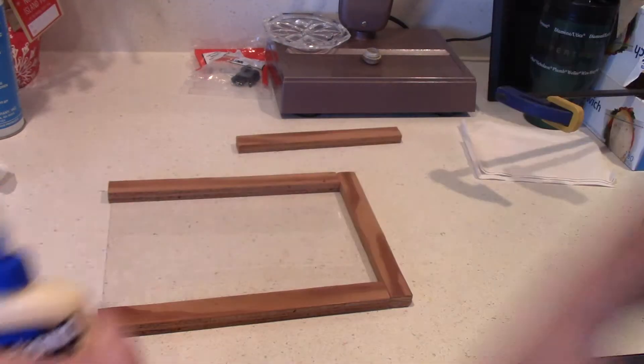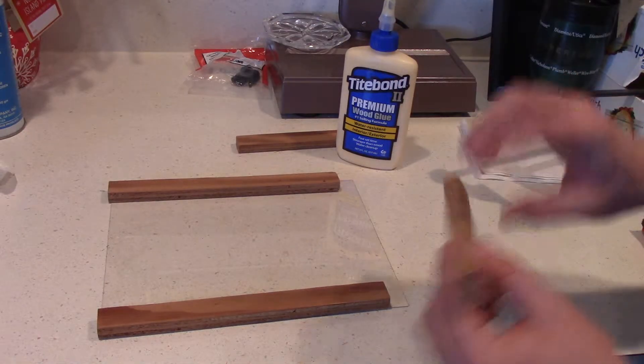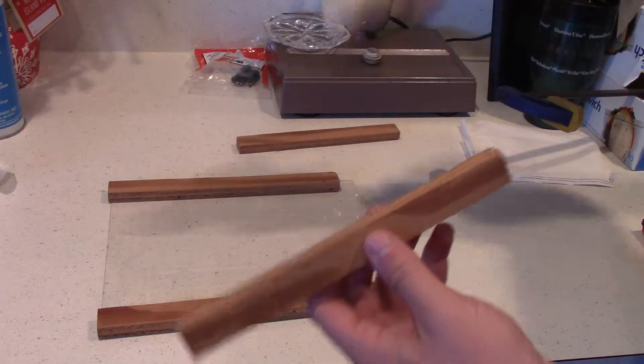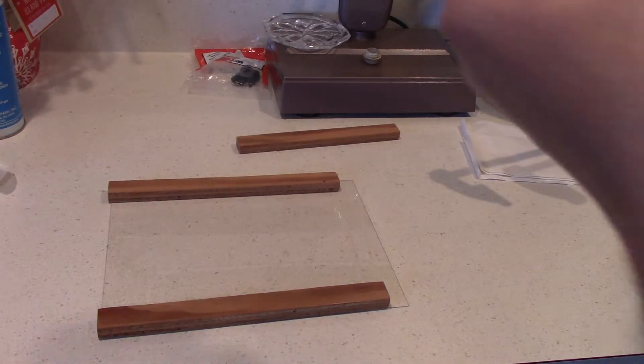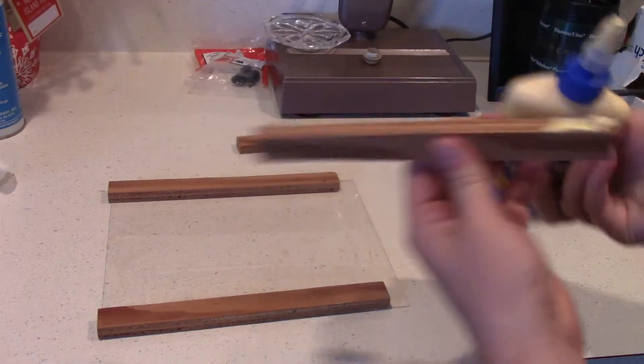Open up your glue. The cap is open. Now what you want to do is take the end piece and squirt some glue on it. Make sure your tip is clean. My tip is not clean.